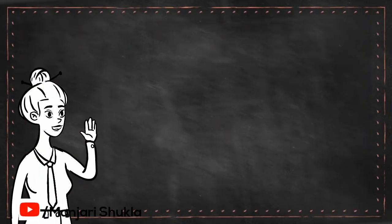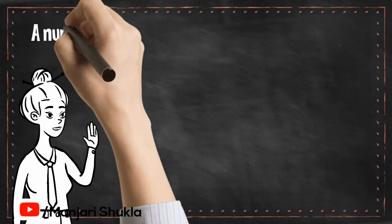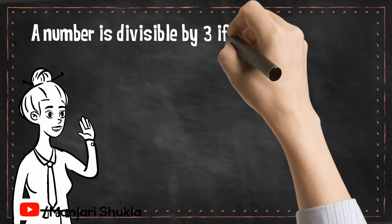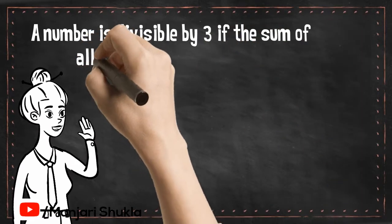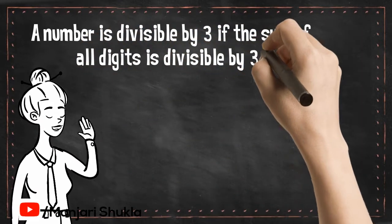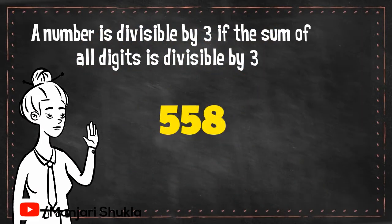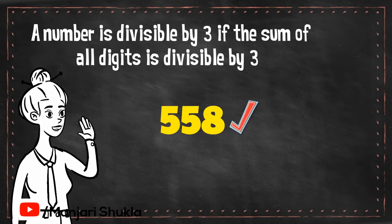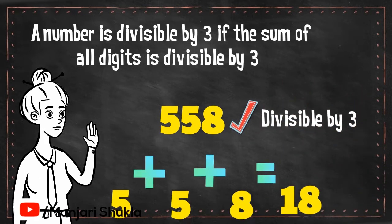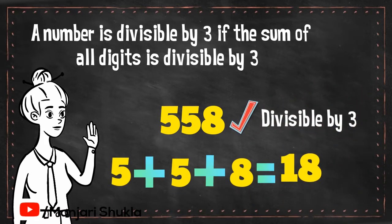Divisibility Rule 3. A number is divisible by 3 if the sum of all the digits is in the 3's table. For example, the number 558 is divisible by 3 because the sum of all the digits equals 18, and 18 comes in the table of 3.